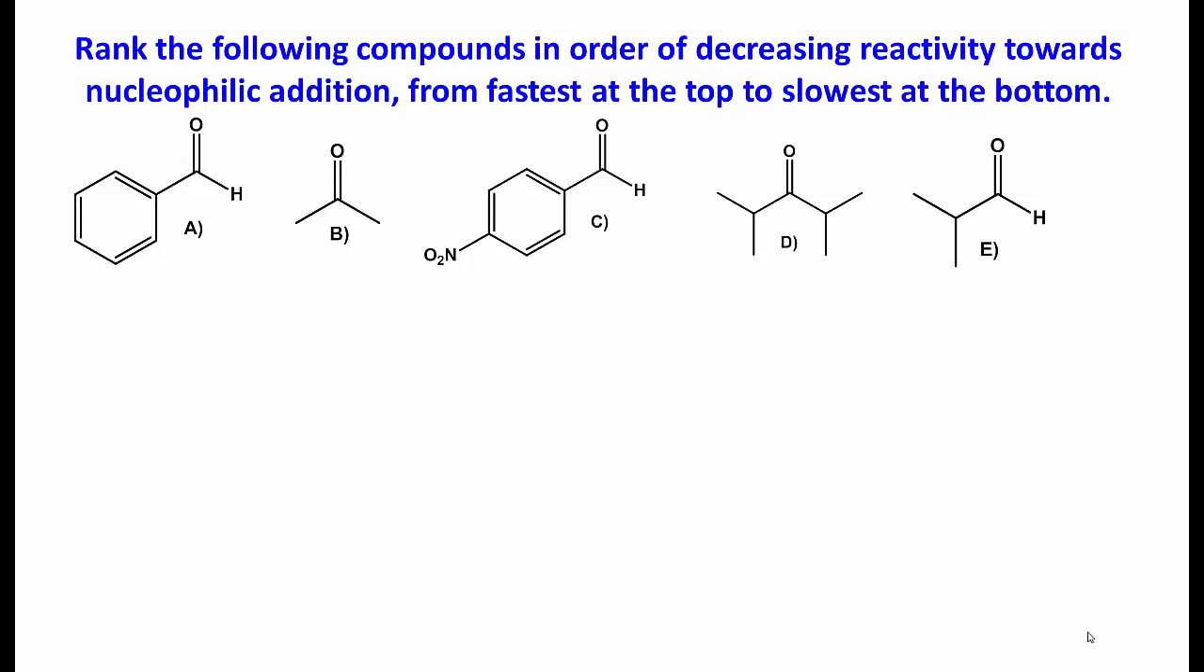Therefore, we would expect the ketones B and D to be the least reactive. When comparing these ketones, 2,4-dimethyl-3-pentanone (D) is more sterically hindered than acetone (B), so D is less reactive than B.